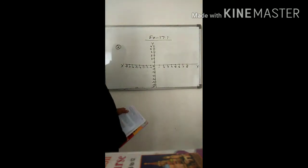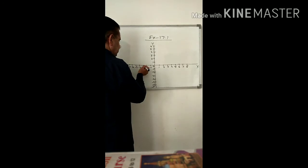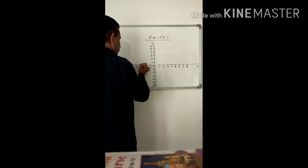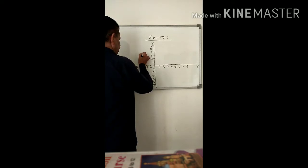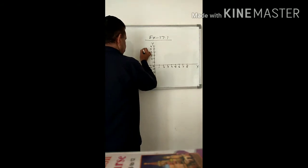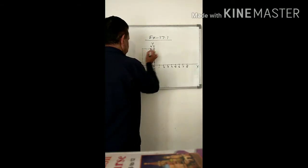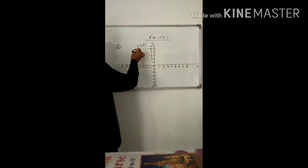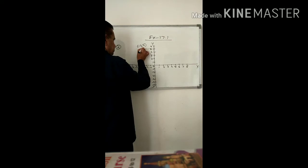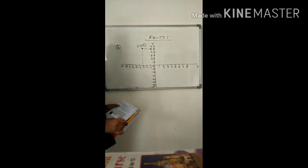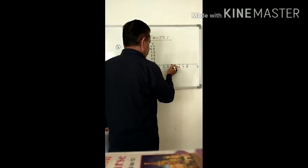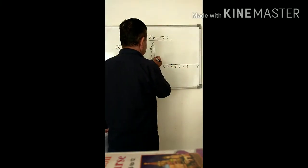First point: minus 3, 5. X is minus 3 and y is plus 5. You can make this point. Second point: 4 and 2.5. Like this.